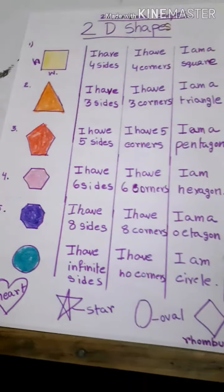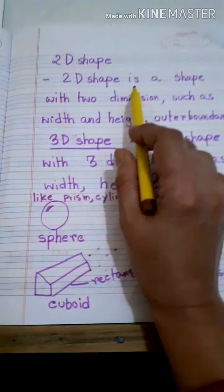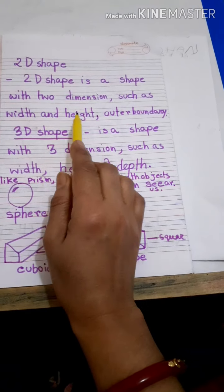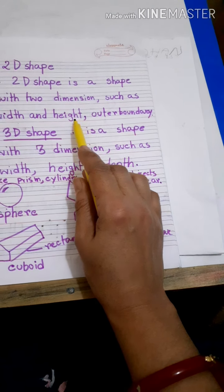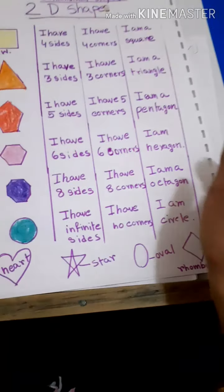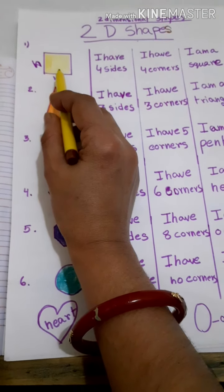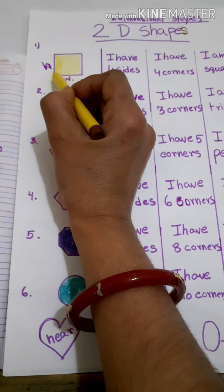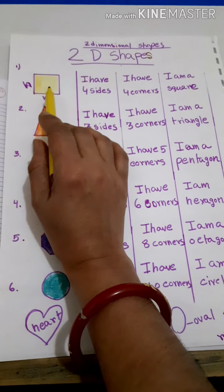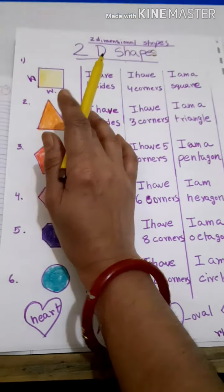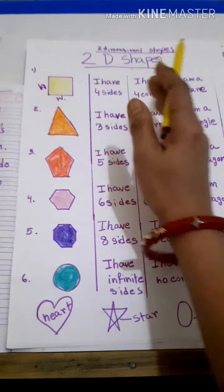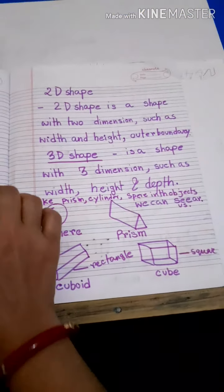Now I will tell you what is called 2D shapes. A 2D shape is a shape with two dimensions such as width and height. That means we take the outer boundary. See here I have drawn one 2D shape — this is called height and this is called width. If you see this kind of shape which has only two dimensions — height and width — that is called a 2D shape.